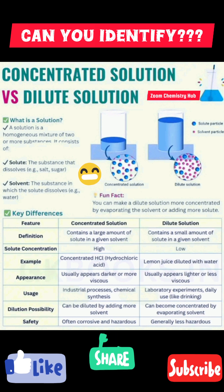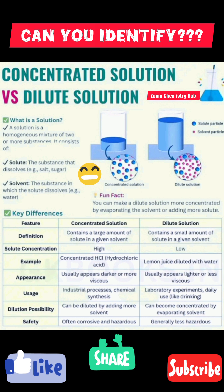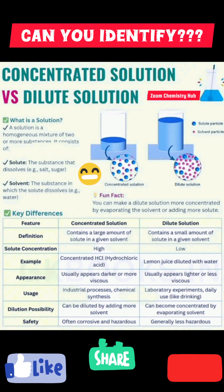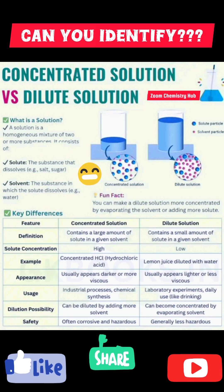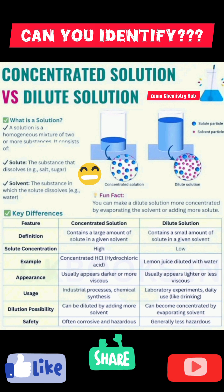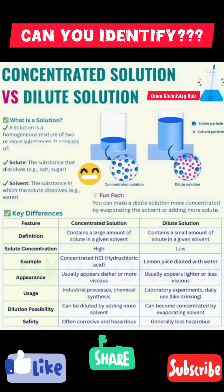Solute concentration: in a concentrated solution the solute concentration is high, and in a dilute solution it is low. Concentrated HCl is an example of a concentrated solution, and lemon juice diluted with water is an example of a dilute solution.